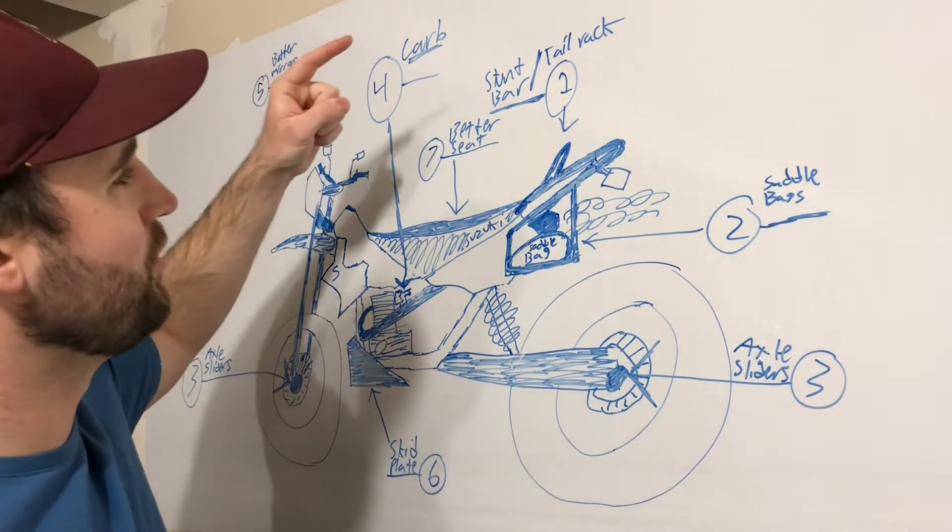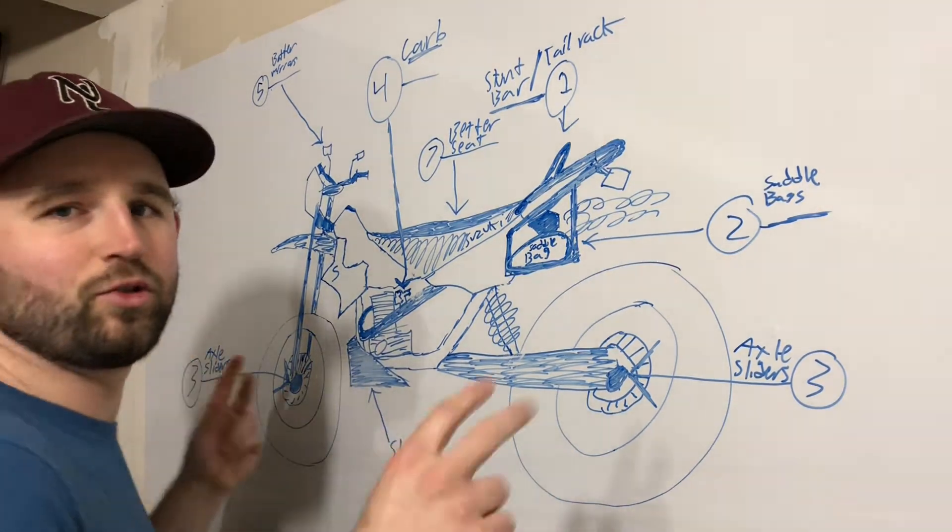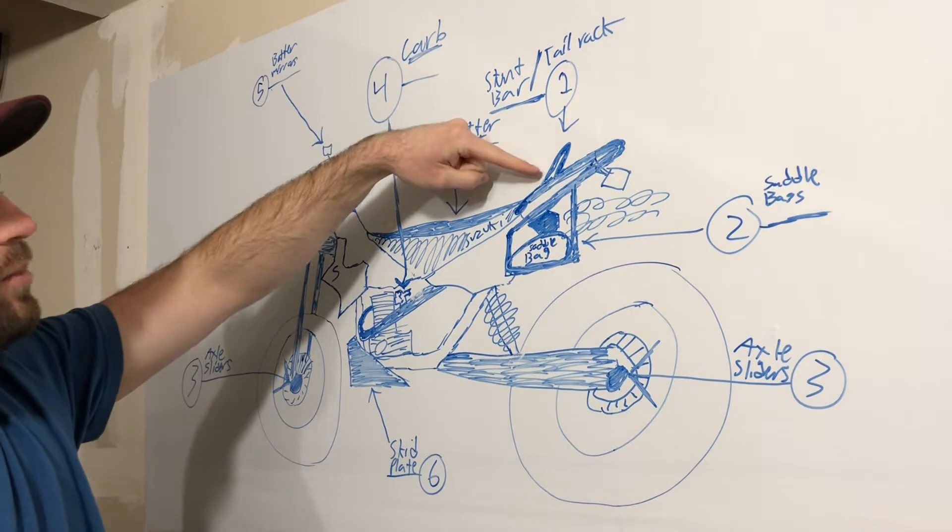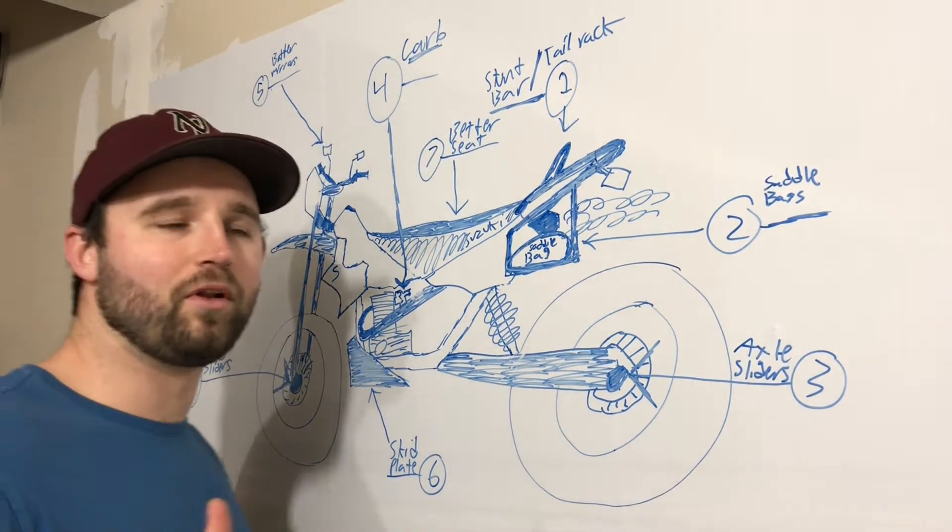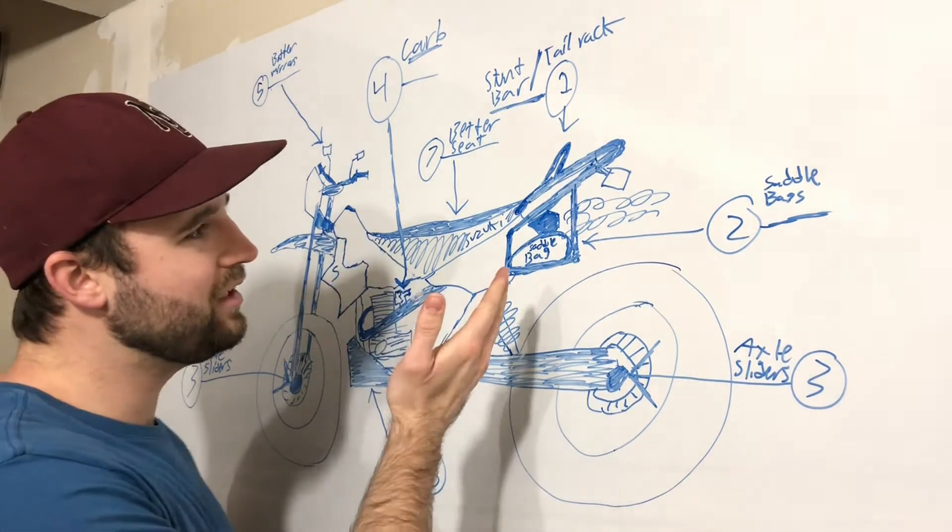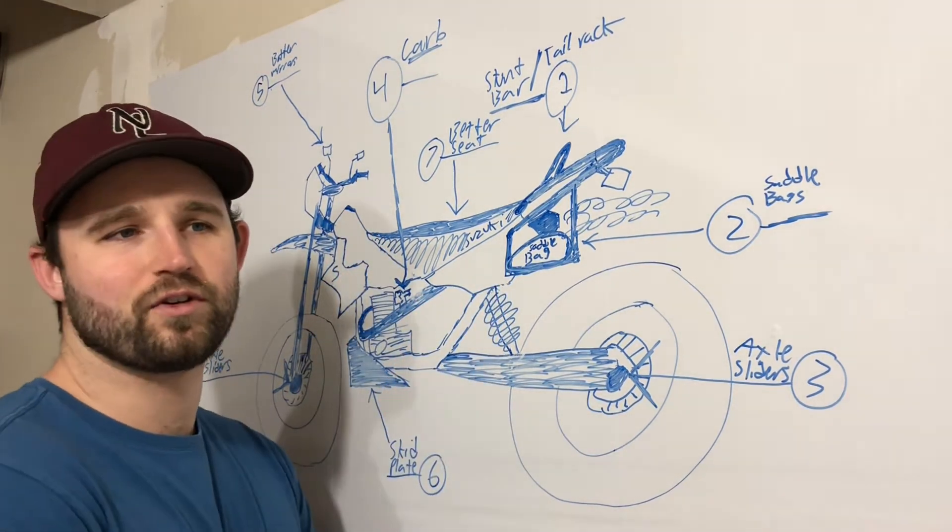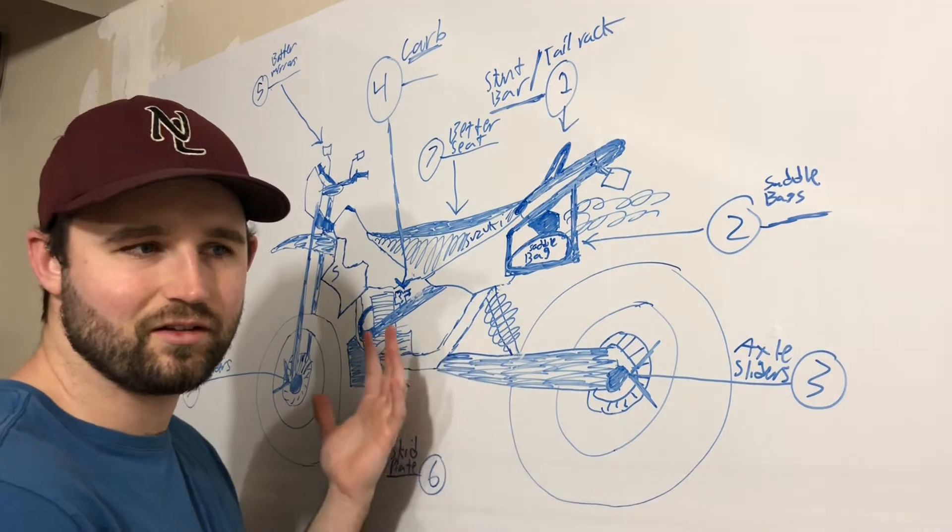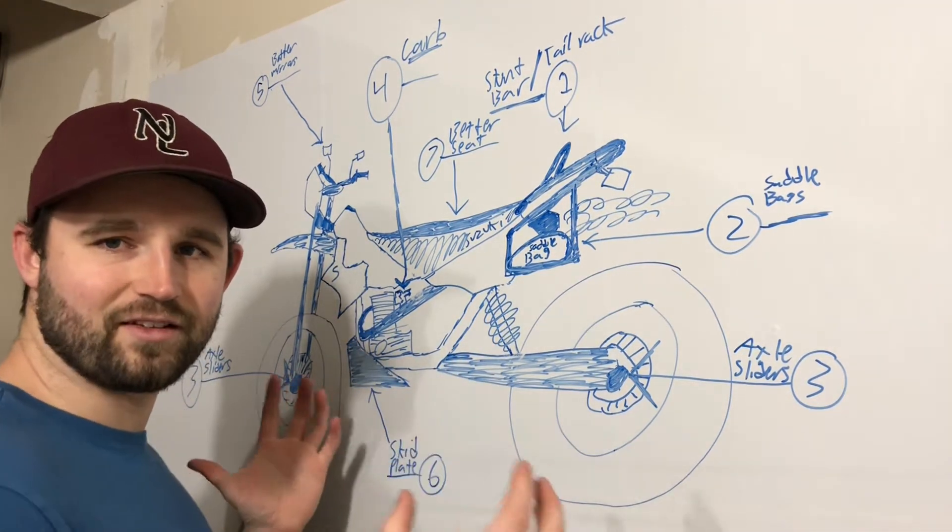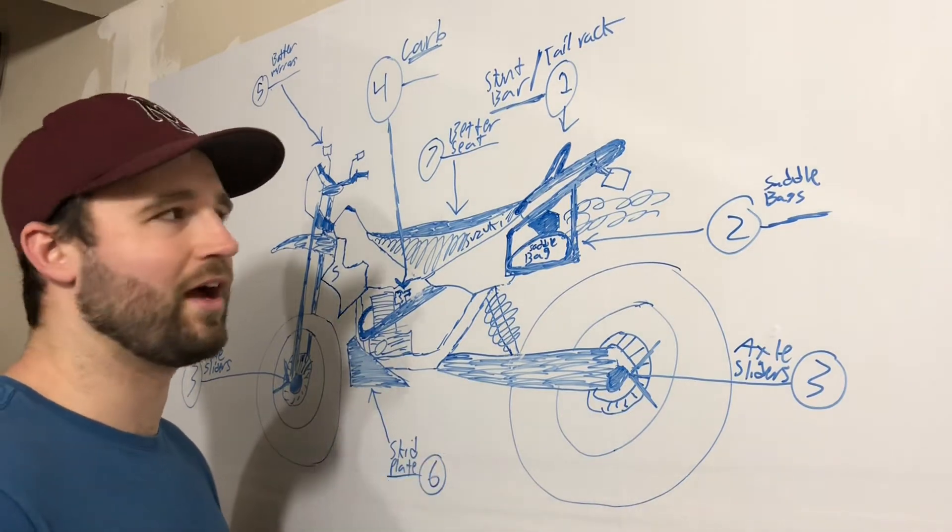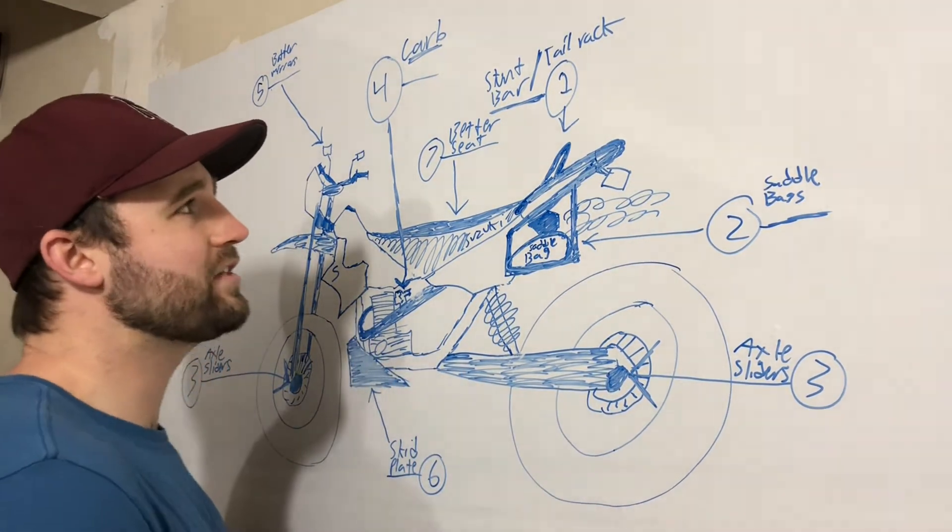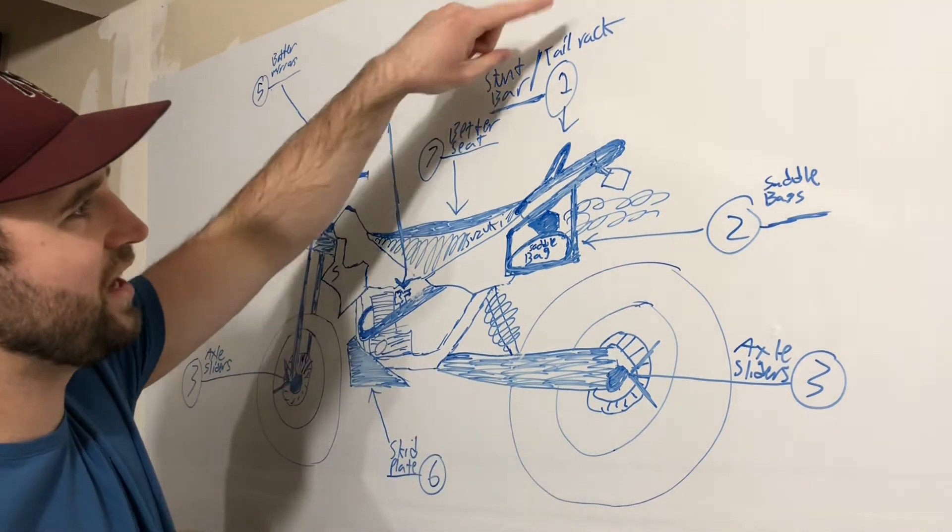First thing I'm going to do for this little project, this Supermoto touring project is what I'm calling it. Number one will be the stunt bar, which I'm hoping will double as a tail pack, tail rack kind of thing. They're generally done on Supermotos for stunting, which obviously it's called a stunt bar. But they're also good crash protection. They usually have pegs on the sides of them that can help if you go down, and I think you could probably mount a bag to it or something. So that's what I'm going to try to do. Stunt bar slash tail rack thing.